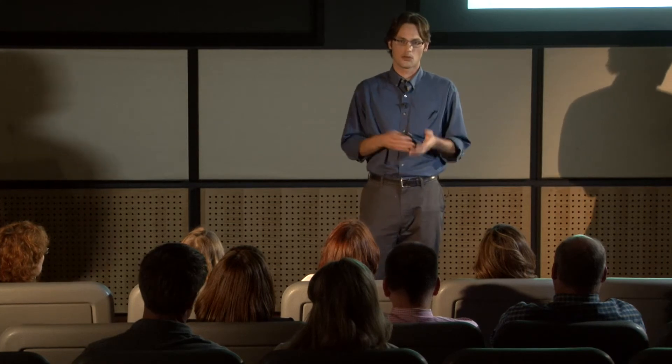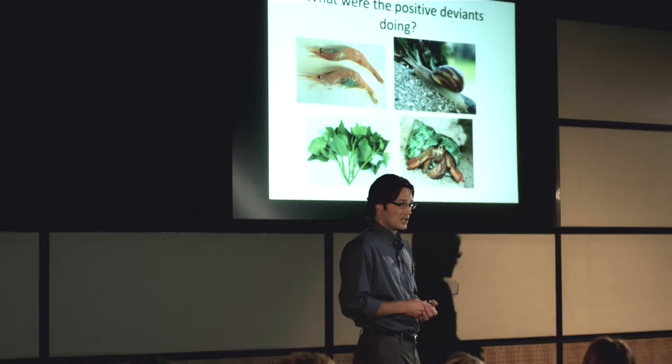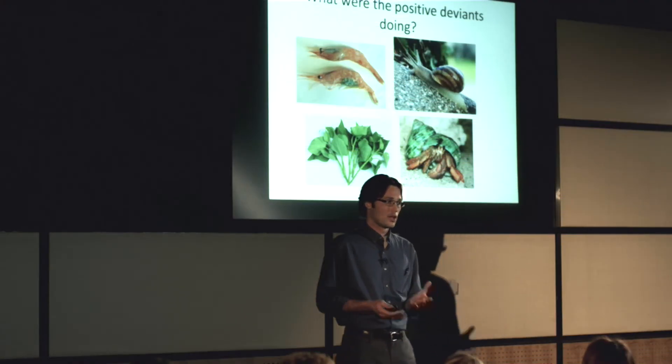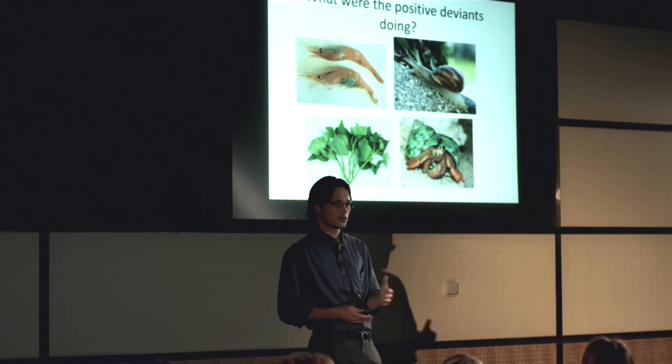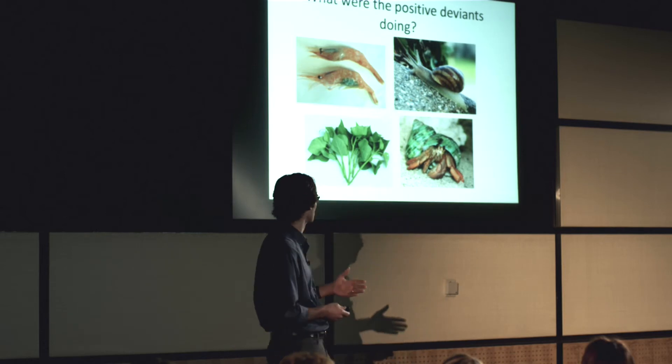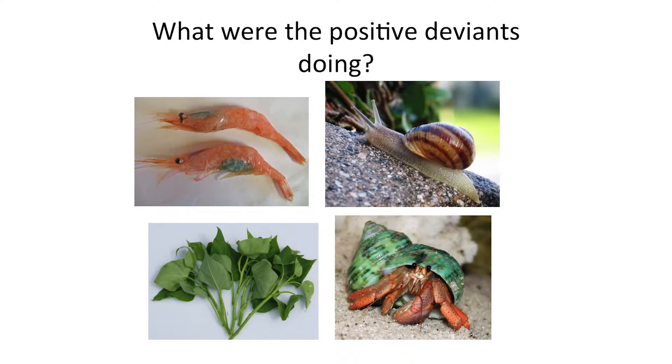So a group with Save the Children tried this positive deviance model. Essentially, they went into the group with the highest risk factors for being malnourished and looked at the children who were not malnourished. They looked for the positive deviants and tried to identify what they were doing. In rural Vietnam, there were some children who, being poor and having almost no resources, were still thriving. Those parents were feeding them shrimp, snails, crabs, and the greens they were able to find in the fields — which was not typical. This was not the traditional diet of rice and other traditional vegetables, but it was working. These children were thriving on this diet. They were positive deviants.